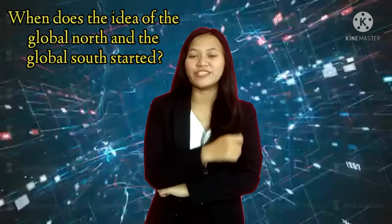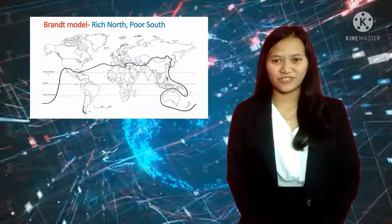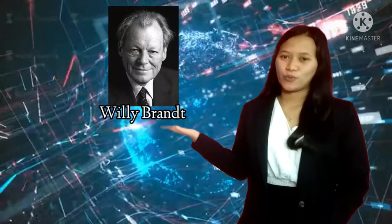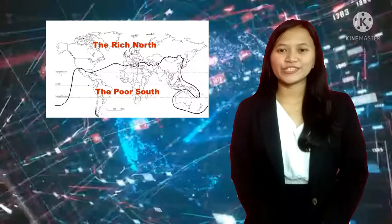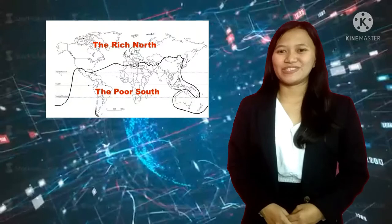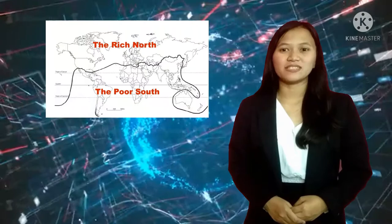What is the idea of the Global North and the Global South? The Brandt Report of 1983 started it out. It was published by a commission chaired by the former German Chancellor Willy Brandt. The report identified the North as the first and second world countries, lying above 30 degrees North. And the South is where the third world countries belong, at approximately 30 degrees South.